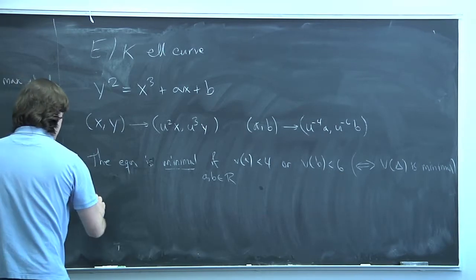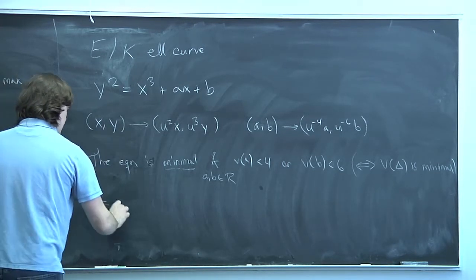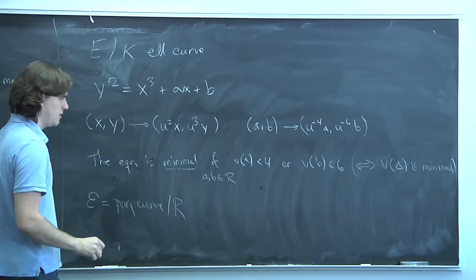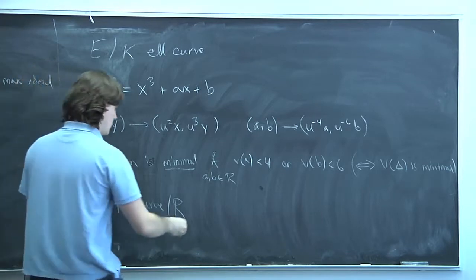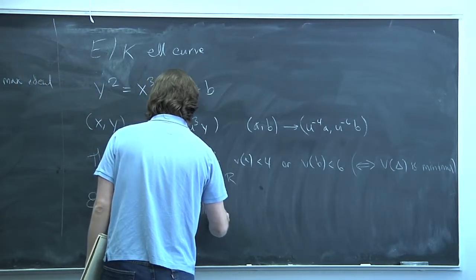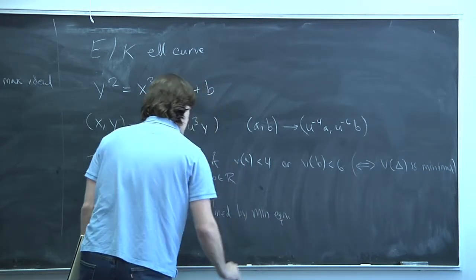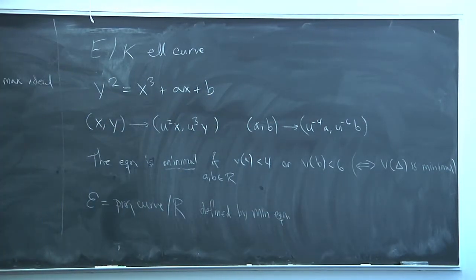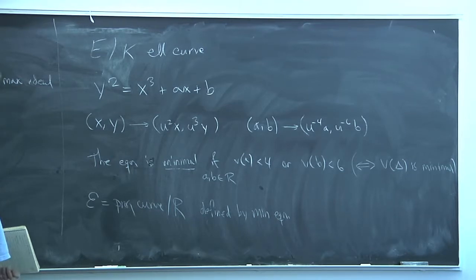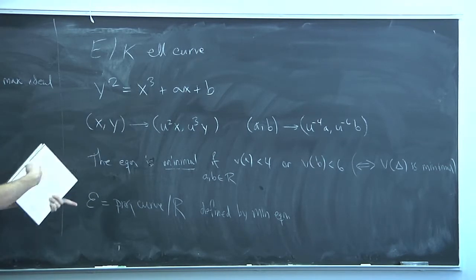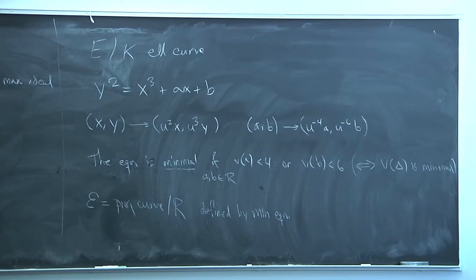I'm going to let script-E be the projective curve over Spec R defined by the minimal Weierstrass equation. This is called a minimal Weierstrass model of E, and such a thing is unique up to isomorphism because the equations are unique up to changes of variables that induce an isomorphism.